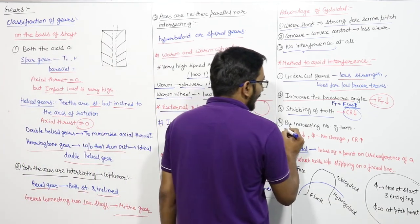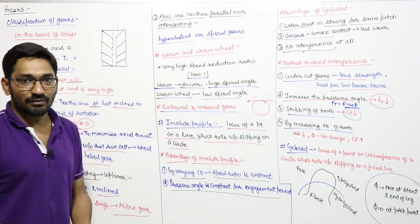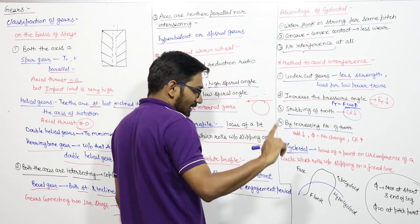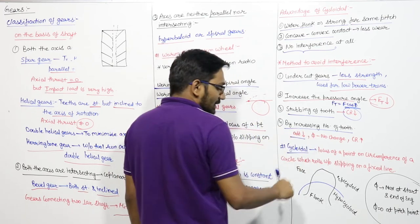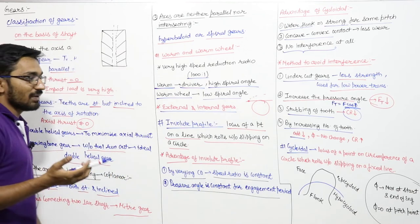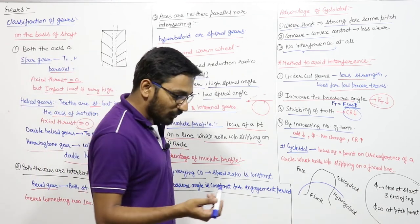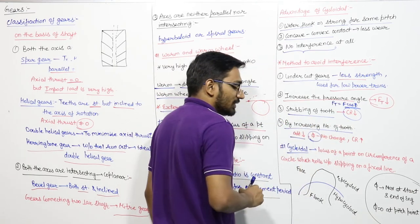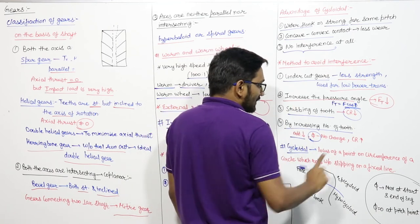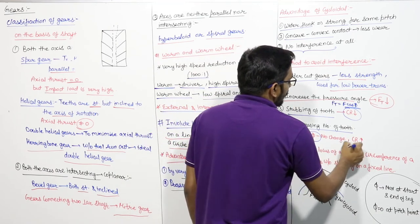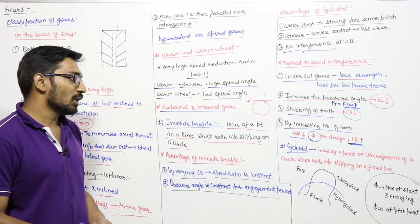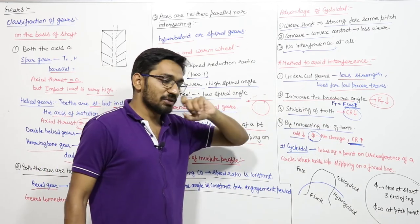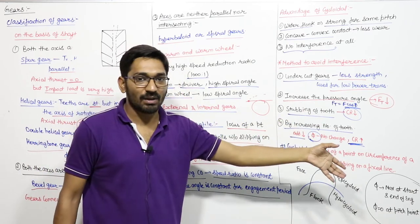The best way to avoid interference is by increasing the number of teeth. Increasing the number of teeth on the same pitch circle decreases the addendum, reducing interference. Additionally, the pressure angle φ remains unchanged, and the contact ratio increases. So the best method to avoid interference is increasing the number of teeth.